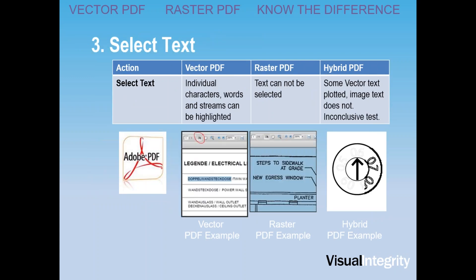The third way to tell is to try and select text. In a vector PDF file, you can select text, copy and paste it to a clipboard — confirming it has information about all characters, lines, and words saved in it. With a raster PDF, text cannot be selected, and clicking on it turns the whole page blue, showing it's a scanned drawing. In a hybrid PDF, the gray text on the left may be vector while the black text on the right is raster — an excellent example of a mixed file.